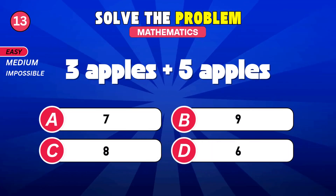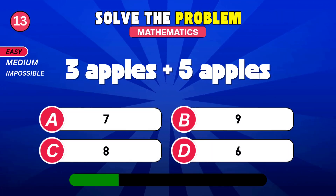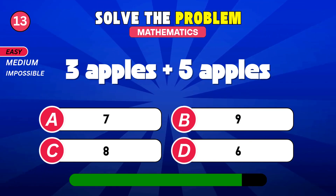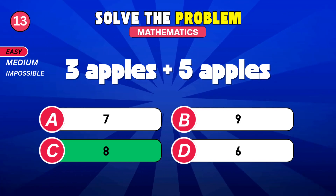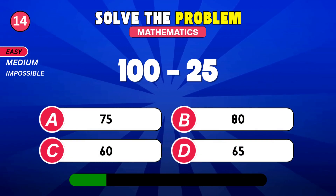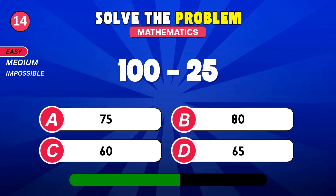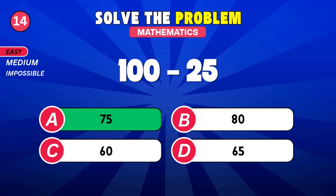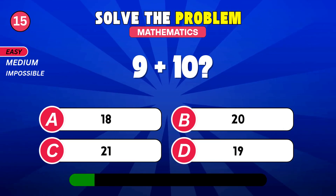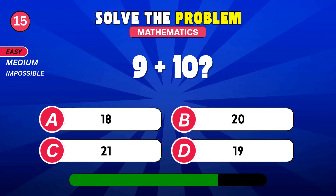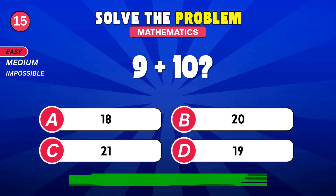3 apples plus 5 apples. 8. What's 100 minus 25? 75. What is 9 plus 10? 19.